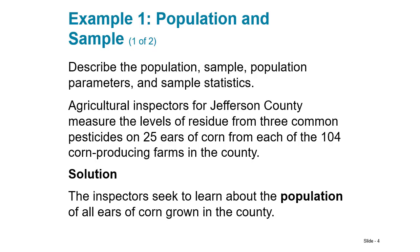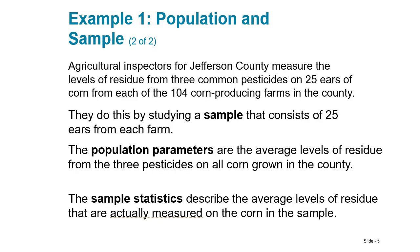The population is all of the ears of corn grown in the county. The sample is those 25 ears taken from each farm. The population parameter would be the average level of residue on all the corn grown in the county, which we don't know because we'd have to measure all of it. But the statistic we get is the level of residue from the actual sample, and from that we can estimate what the population parameter would be.